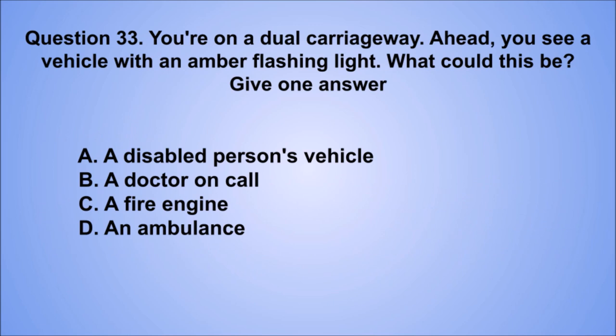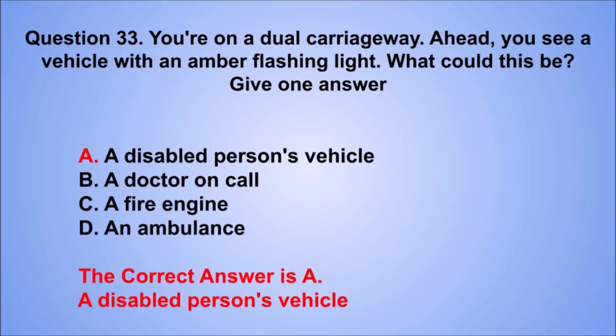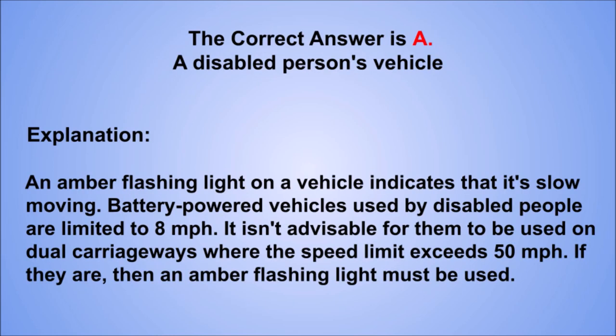Question 33. You're on a dual carriageway. Ahead, you see a vehicle with an amber flashing light. What could this be? Give one answer. A. A disabled person's vehicle. B. A doctor on call. C. A fire engine. D. An ambulance. The correct answer is A, a disabled person's vehicle. An amber flashing light on a vehicle indicates that it's slow moving. Battery powered vehicles used by disabled people are limited to 8 miles per hour. It isn't advisable for them to be used on dual carriageways where the speed limit exceeds 50 miles per hour. If they are, then an amber flashing light must be used.